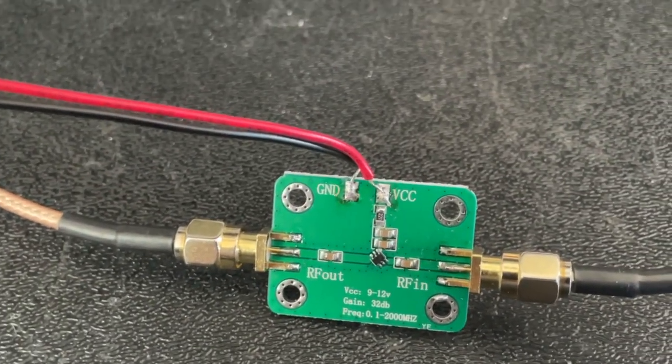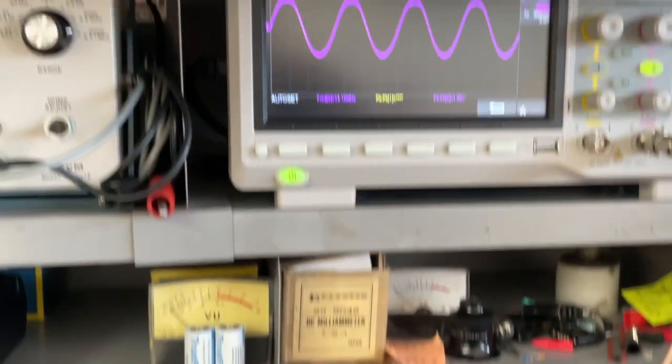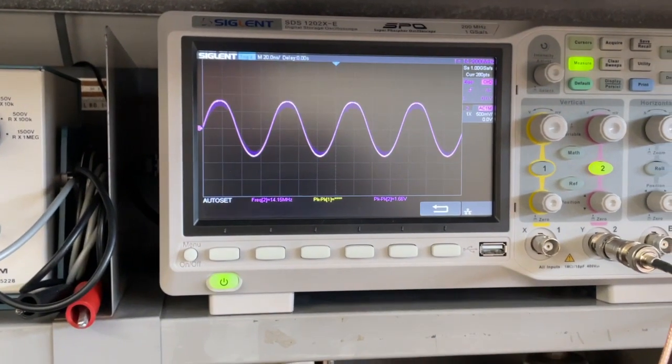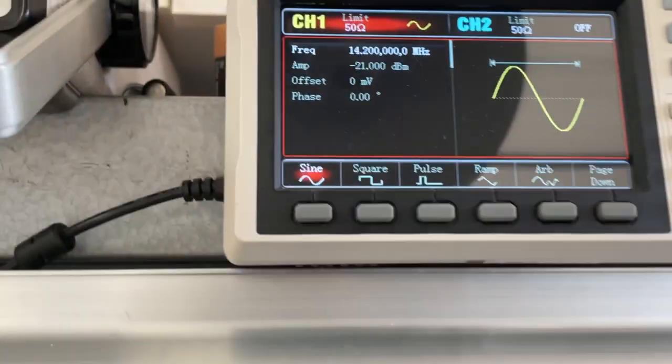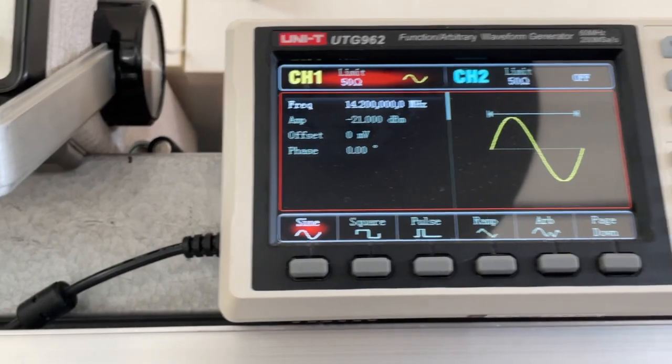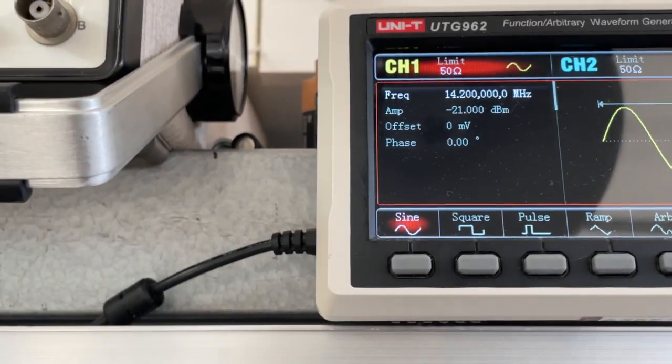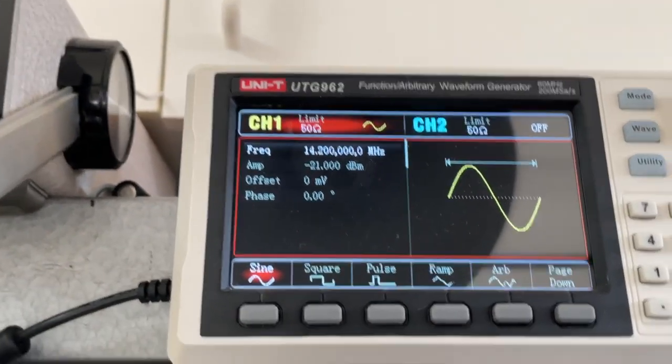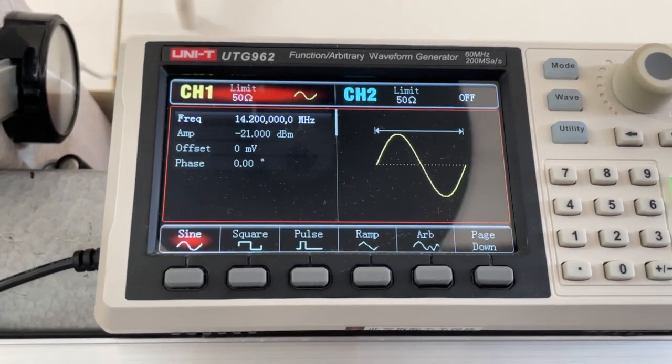Okay, we got it hooked up to the signal generator and we're outputting into the scope at 14.2 megahertz. We're putting out a signal of minus 21 dBm.